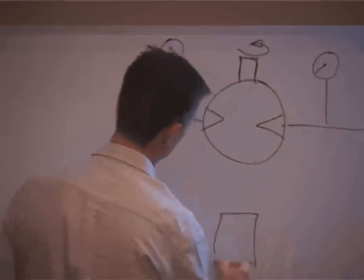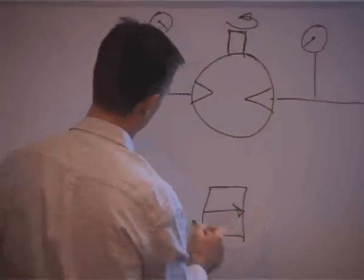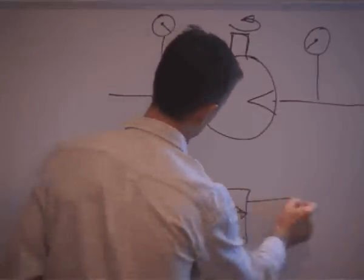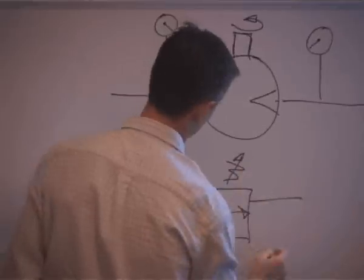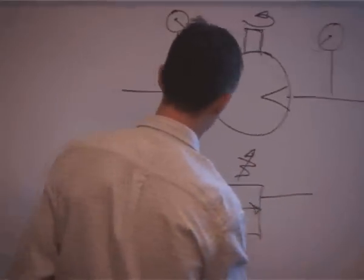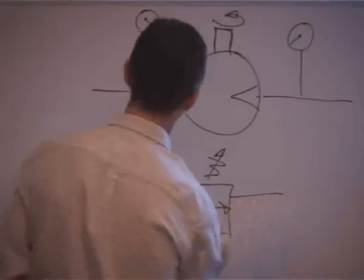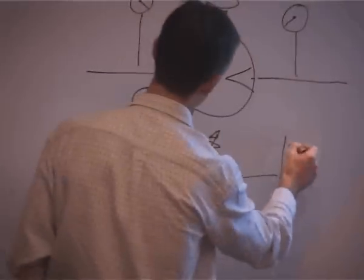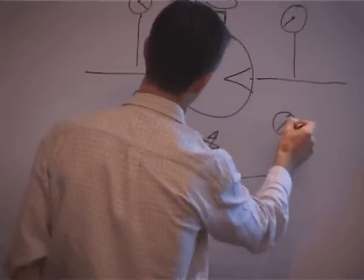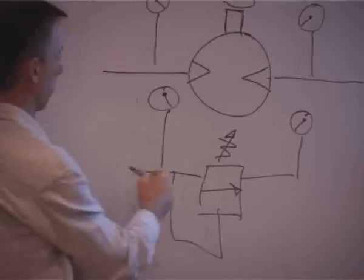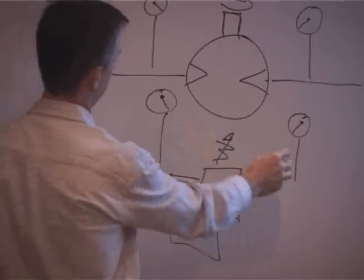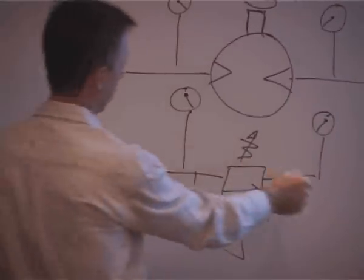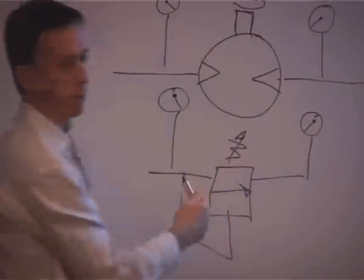We can also get a pressure drop, for example, across a relief valve. Same deal. We've got oil flowing from an area of high pressure to an area of low pressure, but significantly without any useful work being done. So this pressure drop is total heat load on the hydraulic system.